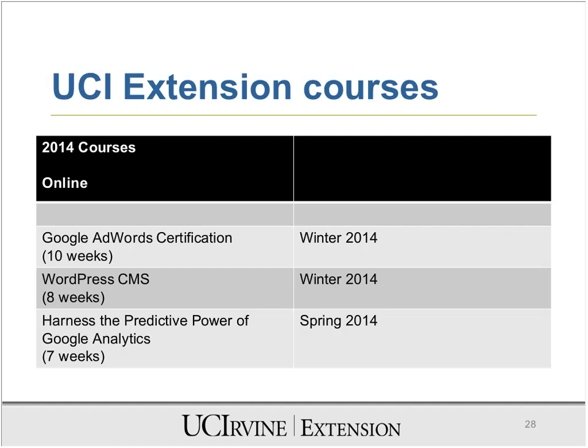Now let me summarize the courses we're offering at UCI. In 2014 — within two months from now — we're offering a Google AdWords Certification course. It's going to be a 10-week course preparing you to take the Google AdWords certification exam. This course starts in winter 2014. We're also offering a WordPress course on how to build a website using a content management system, also in winter 2014. And there will be another course coming up in spring 2014 on the predictive power of Google Analytics.